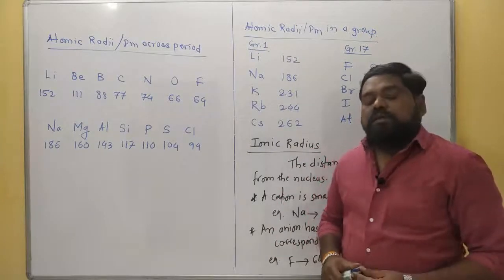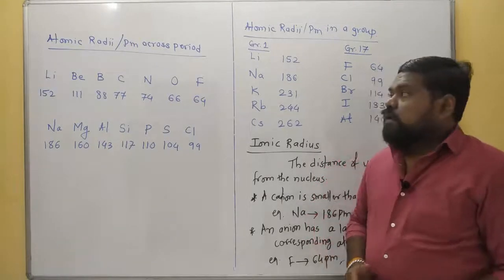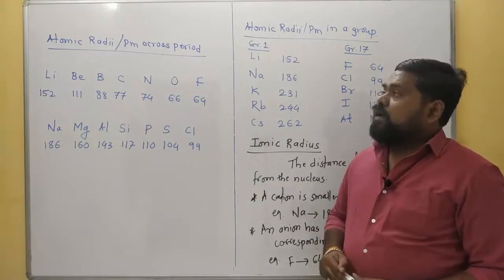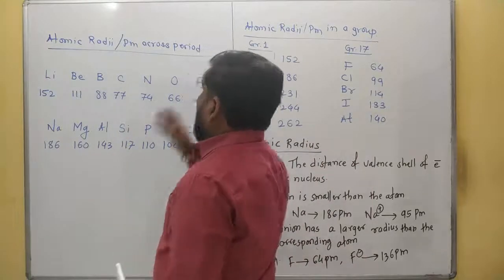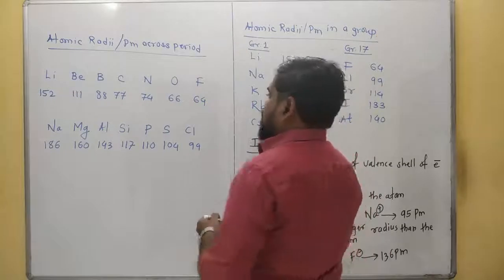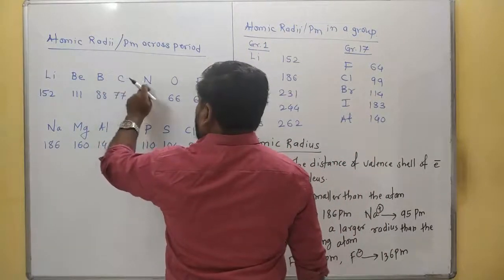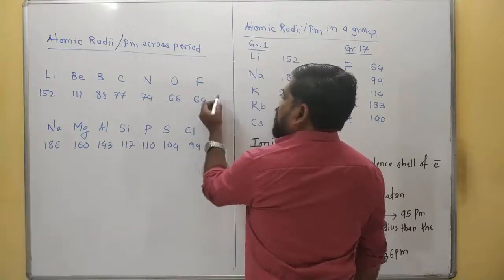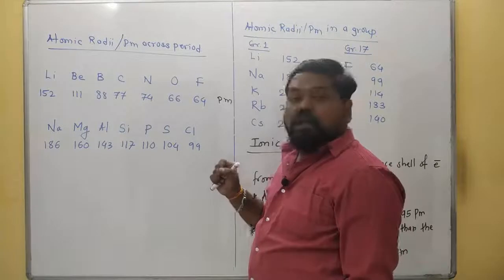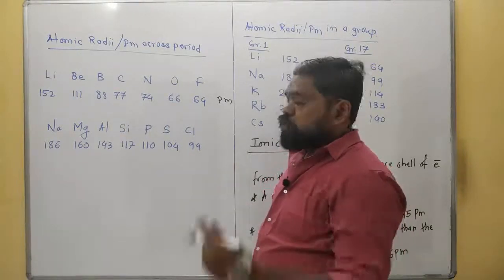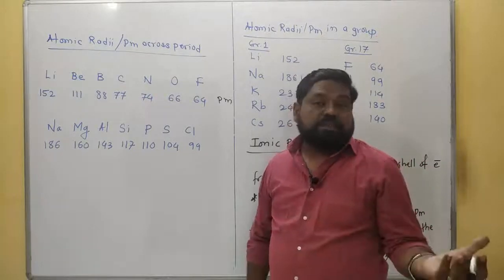Hello everyone, good evening. In the previous lecture we discussed atomic radius. Here I have written on the board: 'atomic radius' is singular and 'atomic radii' is plural. Given the atomic radii in picometers across a period, these are the elements of the second period: lithium, beryllium, boron, carbon, nitrogen, oxygen, fluorine. Below that is period number three: sodium, magnesium, aluminium, silicon, phosphorous, sulfur, chlorine. Noble gases are exceptions so their atomic radii will not follow this trend.